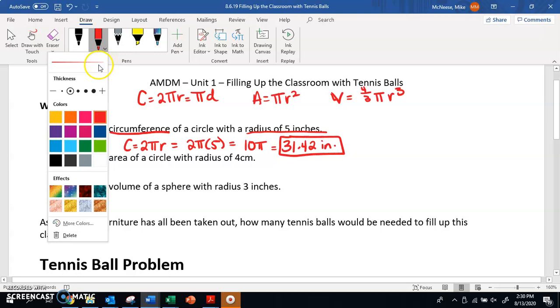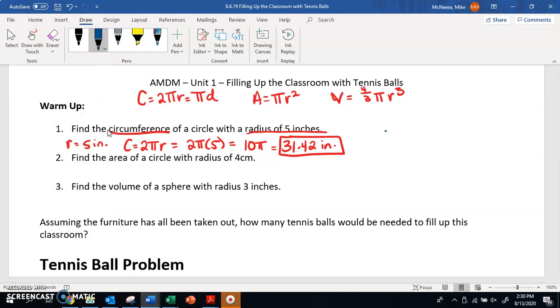Number two, it says find the area of a circle with a radius of 4 centimeters. So finding area when we're given radius of 4 centimeters. So R is equal to 4 centimeters. And since we're doing area, we can say area equals πR squared, which equals π times 4 squared, which equals 16π, because 4 times 4 is 16. So 16π is equal to 50.27 square centimeters, because remember, area is a unit of square. So we're looking in two directions, so it's going to be 50.27 square centimeters.